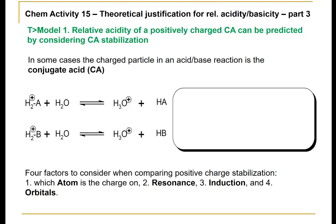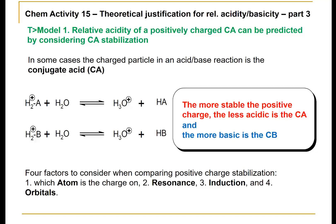Therefore, our focus in terms of predicting relative acidity will not be to look at the relative stability of a negatively charged conjugate base, but rather we need to focus on the positively charged conjugate acids. As we shall see, the more stable the positive charge of our reactant, the less acidic is the conjugate acid. The more stable the positive charge, the less reactive is that reactant, and correspondingly, the more basic is the conjugate base.